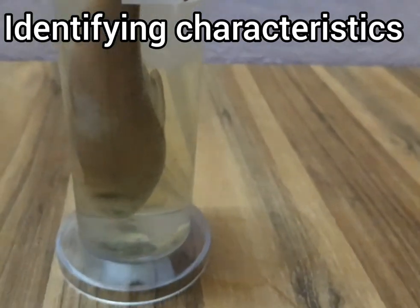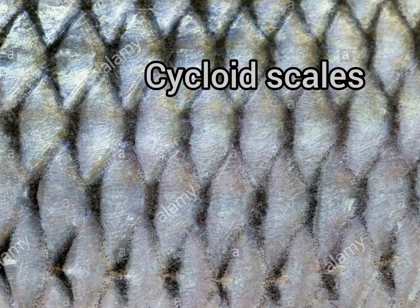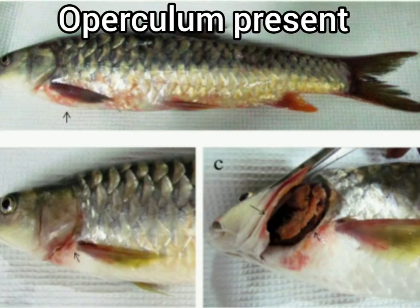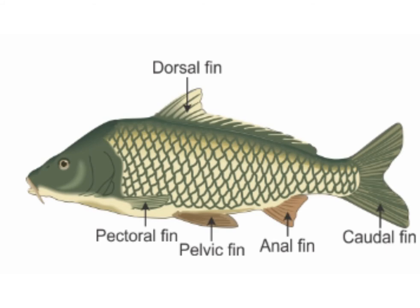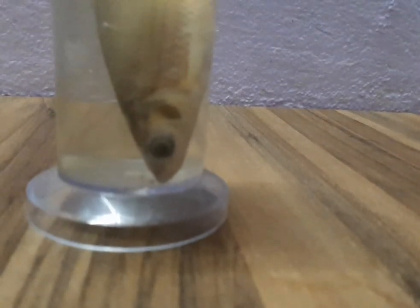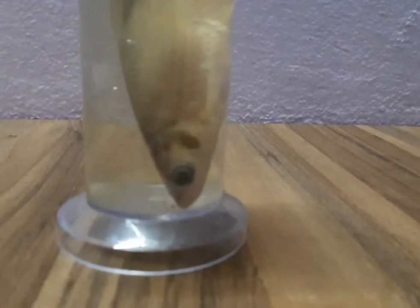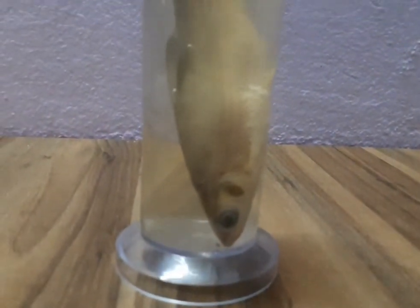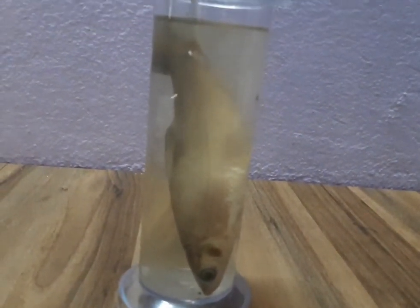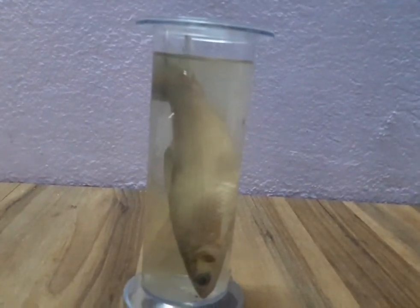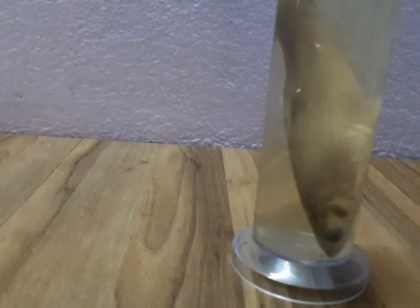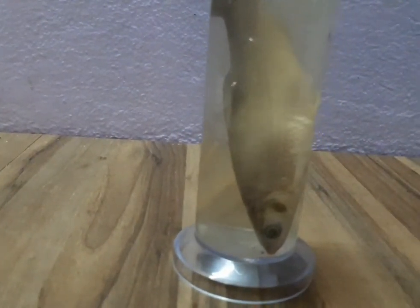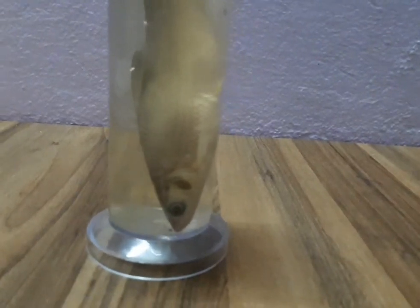Identifying features of Labeo rohita: it has a streamlined body covered with cycloid scales. An operculum is present covering five pairs of gills. There is presence of thick and fringed lips. The caudal fin is homocercal, that is symmetrical. General characteristics: Rohu is a freshwater fish used as food. The body is laterally compressed and streamlined. The region from the depressed and obtuse snout to the posterior end of the operculum forms the head. A pair of nostrils and median eyes are present on the head, and eyes are without eyelids.